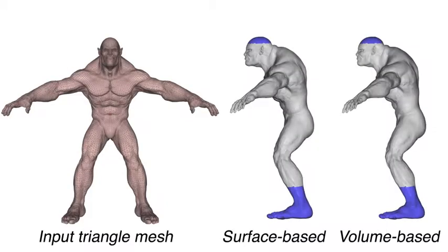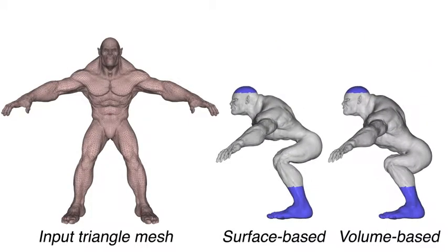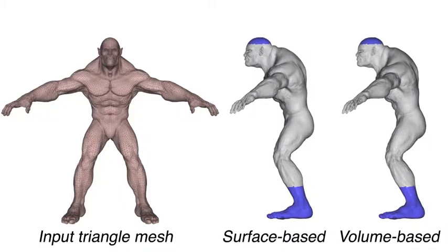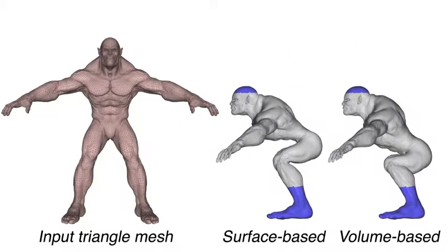When meshes have artifacts like self-intersections, one alternative is to avoid volumetric processing altogether. But this leads to unintuitive results when dealing with solid shapes.